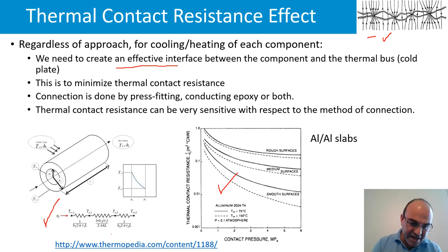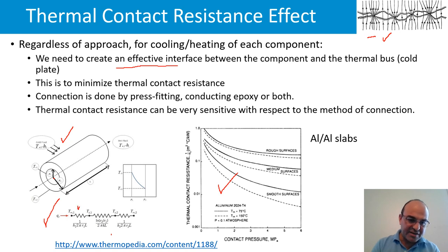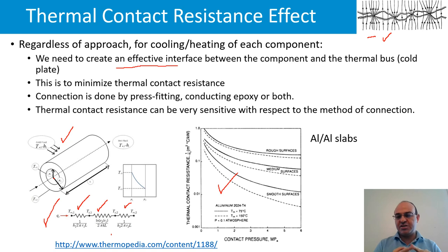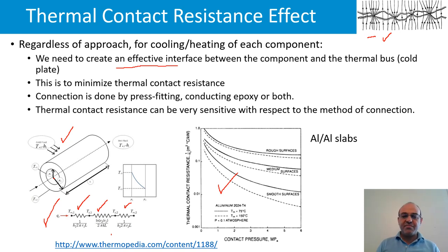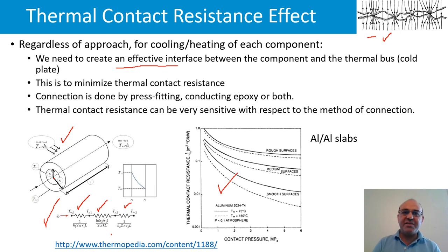Here is a heat transfer refresher on writing heat transfer in terms of thermal circuits. In this case, heat transfer between the interior of a tube and the outside involves: convection resistance inside the pipe, conduction resistance of the tube wall, and convection resistance on the outside. Often in design, people assume perfect thermal contact and assign zero value to thermal contact resistance, but in reality this can be very different and significantly change the end result.